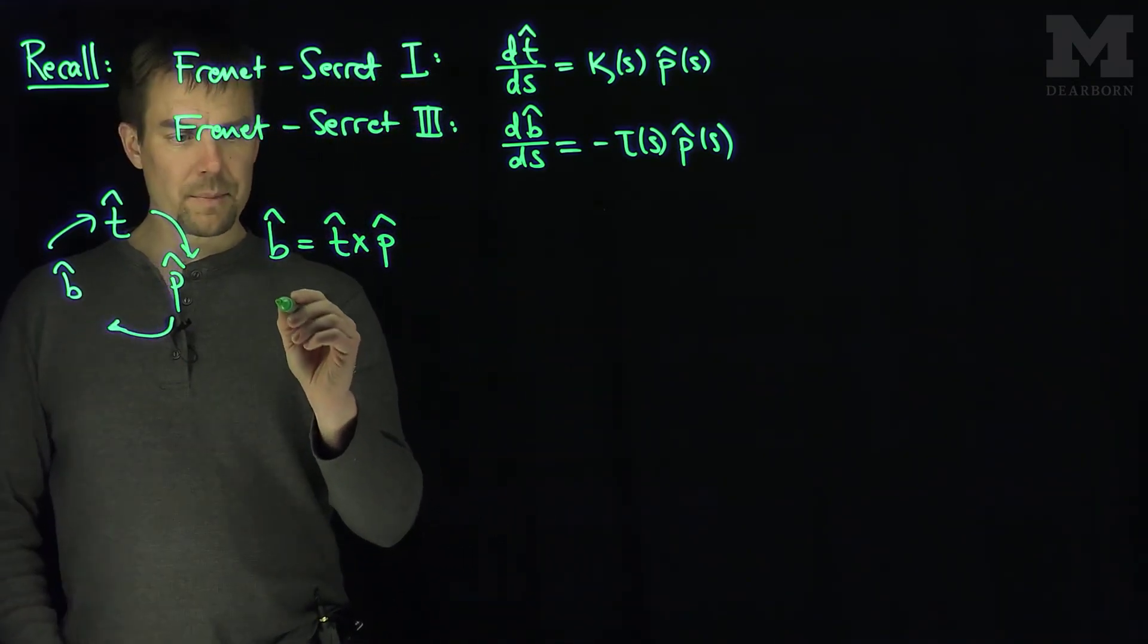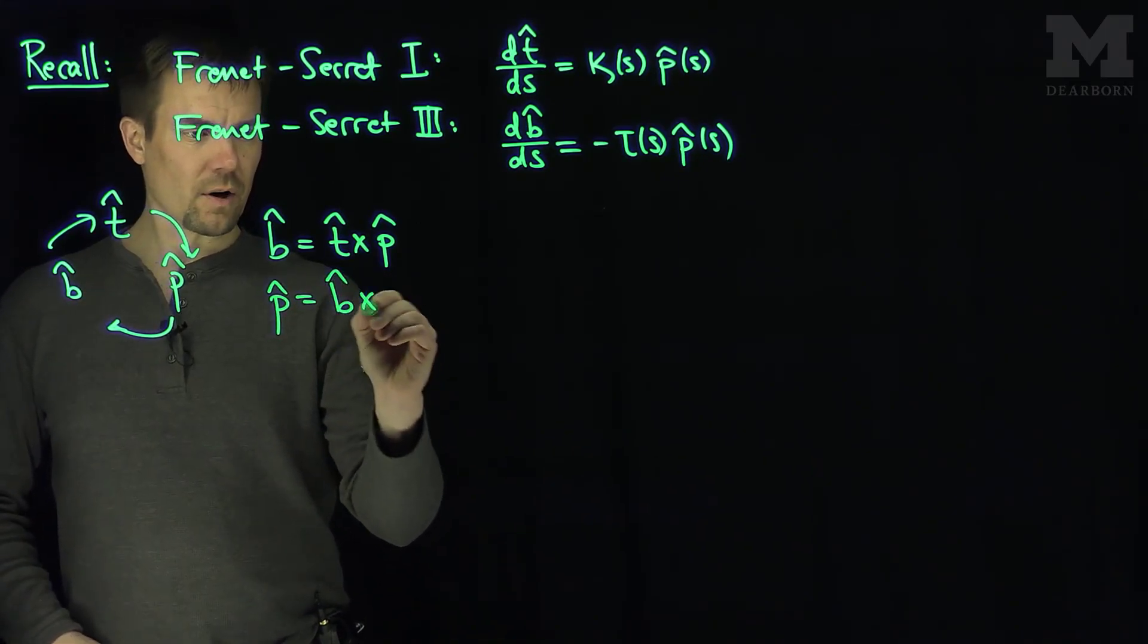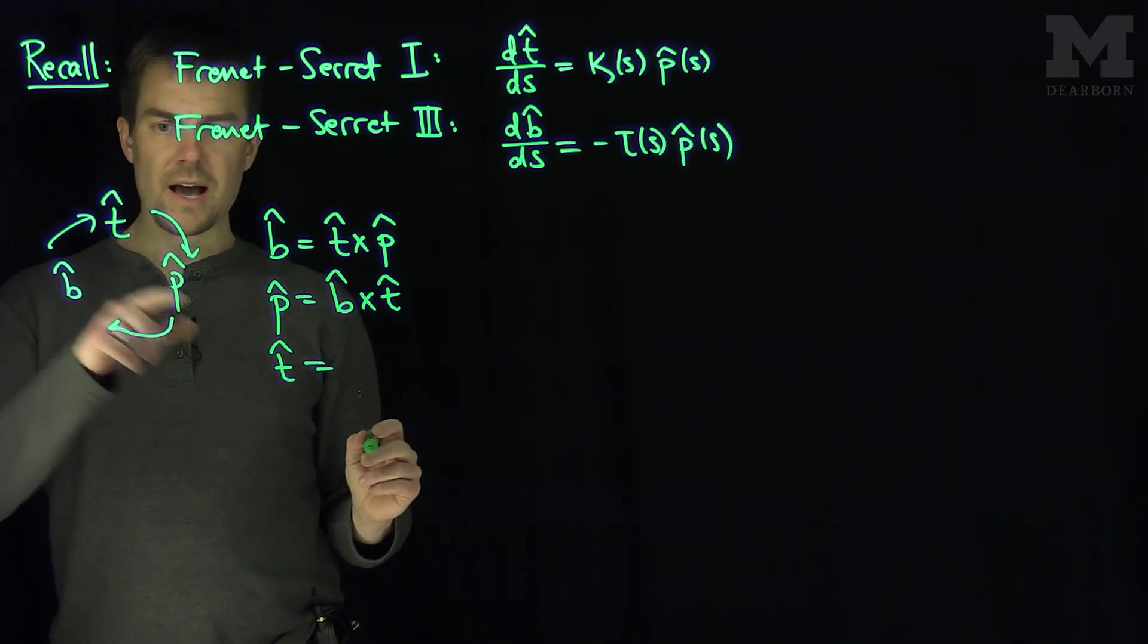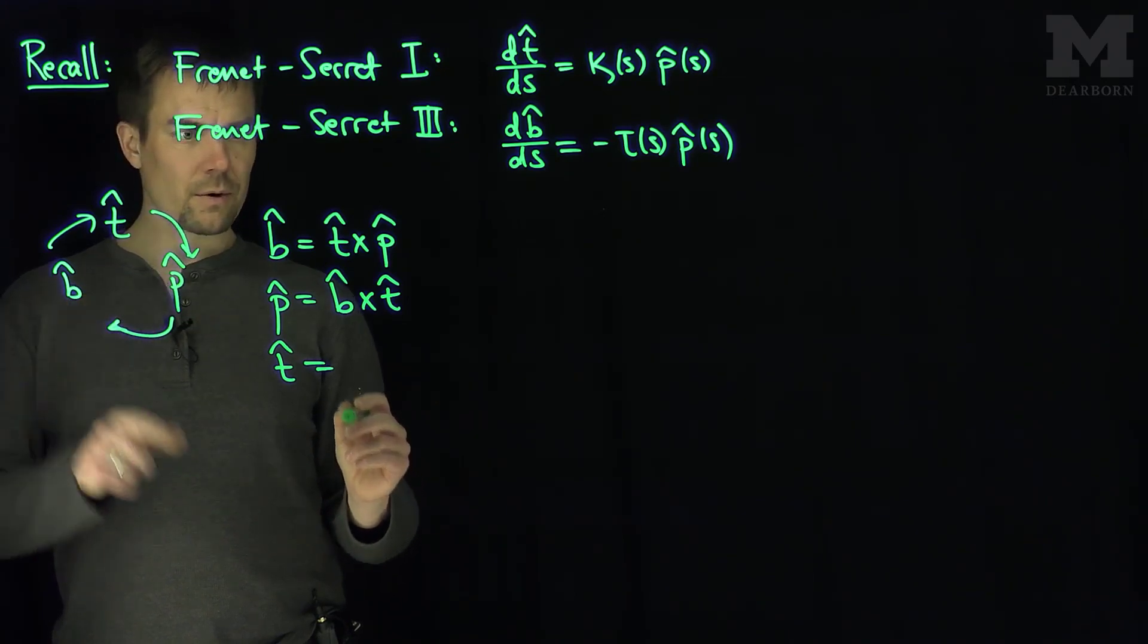We also get that p hat is b hat cross t hat, and we get that t hat is equal to p cross b.